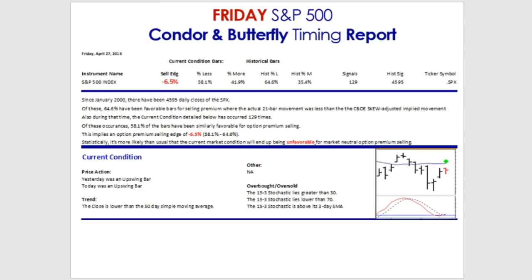The first report is for those that sell premium in a delta neutral fashion, perhaps through condors and butterflies. Since January of 2000, we've had roughly 4,595 daily closes of the S&P 500. Of all those bars, 64.6% are considered favorable for selling premium — where the actual subsequent 21-bar movement was less than what the option prices were implying. That's what makes it favorable, and it occurred not quite two-thirds of the time.